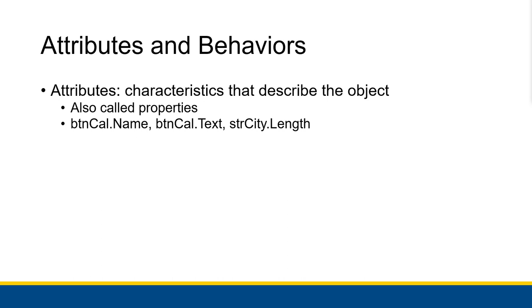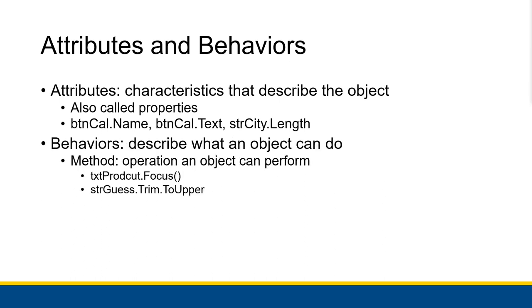We also have the terms attributes and behaviors in object-oriented programming. We use attributes to describe the characteristics that describe the object — these are also called properties. So if you're familiar with properties of controls or things like that, you already know what an attribute really is. For example, a button's name, a button's text property, or the length of a string — that's also a property or an attribute of those button or string objects. And the behaviors describe what an object can do.